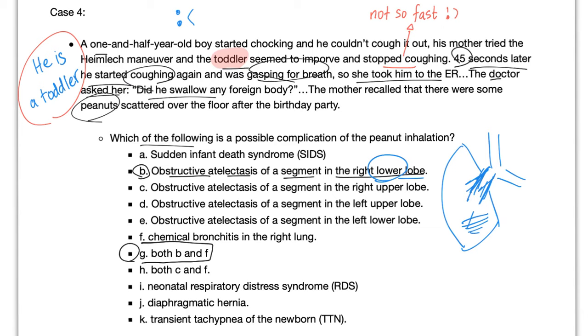F is the chemical bronchitis in the lung. Because the peanut will land here in the segment and will block a bronchus. And then it will start fragmenting. And all of these chemicals will cause irritation called chemical pneumonitis. So, the answer is both B and F. Obstructive atelectasis and chemical bronchitis. Now, why did the kid initially seem to improve and stop coughing? Because the peanut passed the carina. And the carina is the last part that has cough reflex.